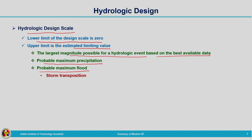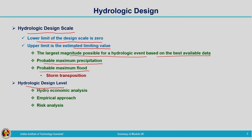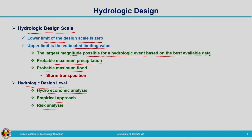That is covered under storm transposition. Coming to the hydrologic design level — how to decide this design level — we have gone through three different methods: hydro-economic analysis, empirical approach, and risk analysis. Under risk analysis we have discussed about risk and reliability. Risk represents the probability of occurrence of a flood equal to or beyond a certain threshold value associated with the structure. Risk and reliability are complementary to each other; if one is calculated, the other can be obtained by subtracting it from one.